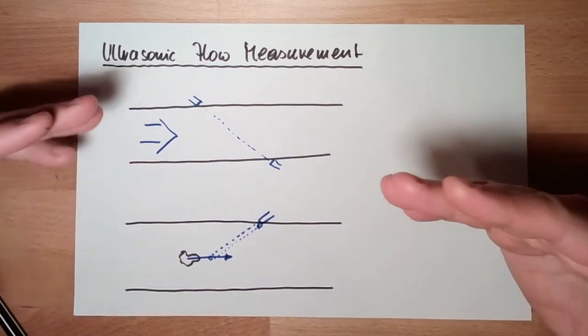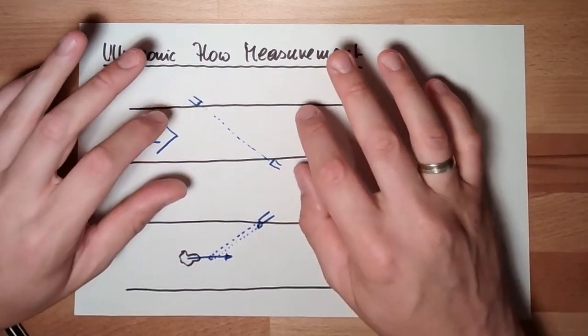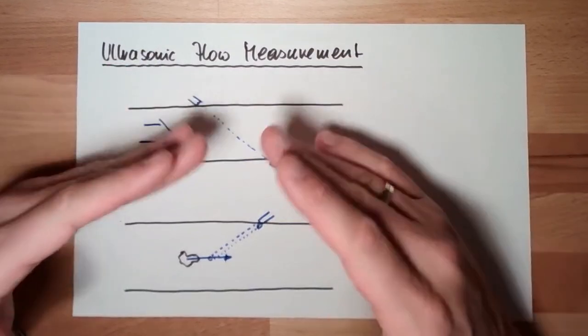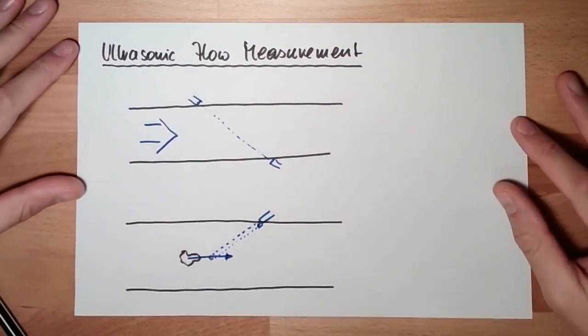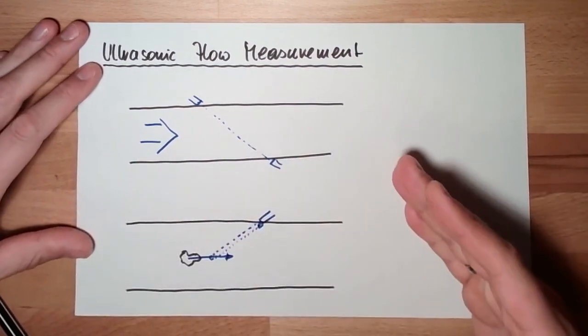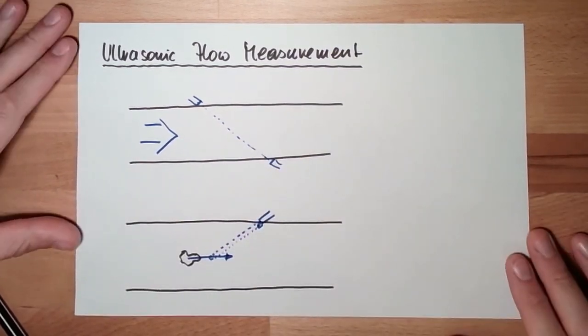And there is also clamp-on design possible, which means you don't have to destroy or build something in your tube. This is also, of course, nothing inside, no pressure drop.